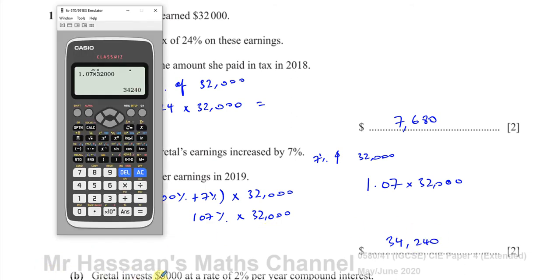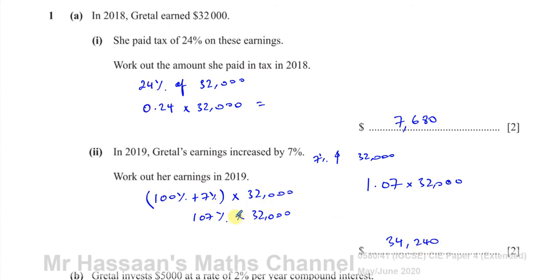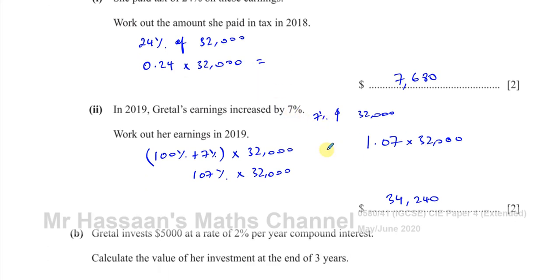As I mentioned, we could have found 7% of $32,000 first. That's 0.07 times $32,000, which gives us $2,240. Add that to $32,000 and it gives us the same answer. But the multiplier method is a nice quick way that will help us when we get to compound percentages.